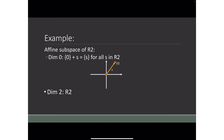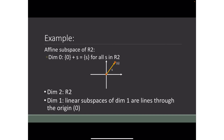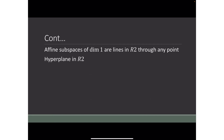For dimension two, the only linear subspace of dimension two is R² itself. For dimension one, the linear subspaces of dimension one are lines through the origin. Therefore, affine subspaces of dimension one are lines in R² through any point — not necessarily through the origin. The hyperplane in R² follows from the definition given previously.